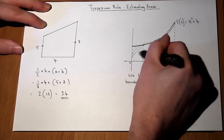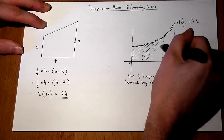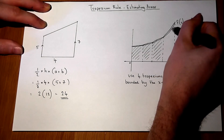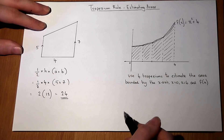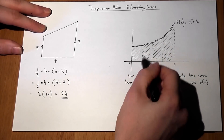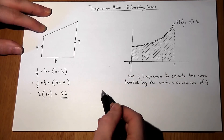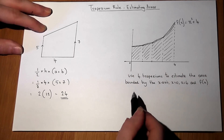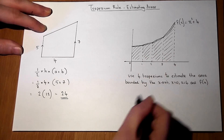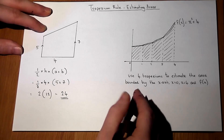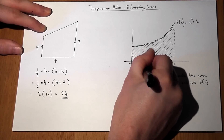So I must work out the height of each of the trapeziums, as well as the width. We've been told to use four trapeziums, so the x-values are 0, 1, 2, 3, and 4. Our H for each trapezium is therefore 1.